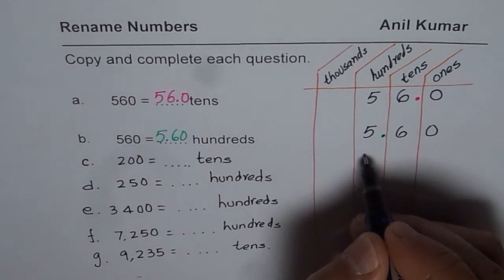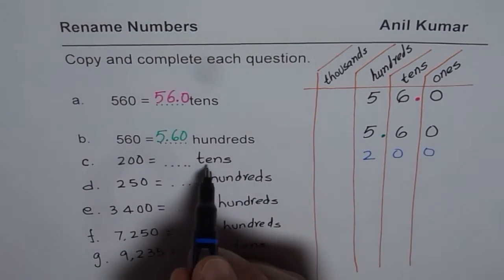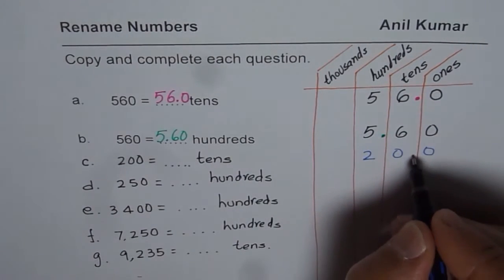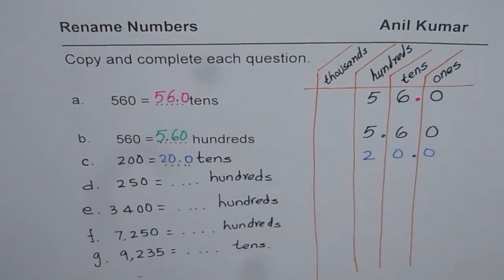200. So 200 means 2 comes in hundreds position, 0, 0. We want to rename to tens. So the decimal comes right there. So the number is 20.0.